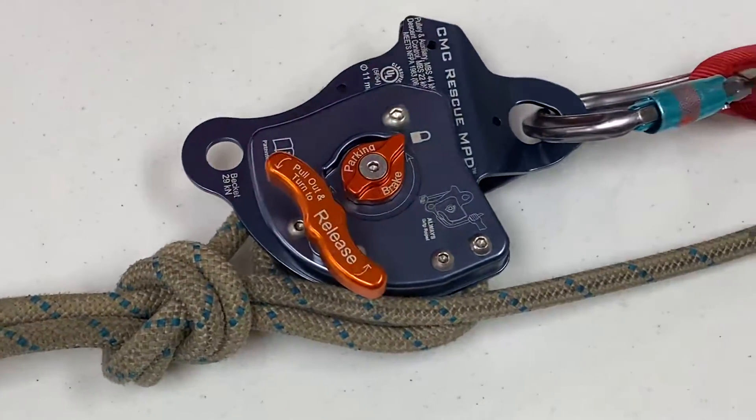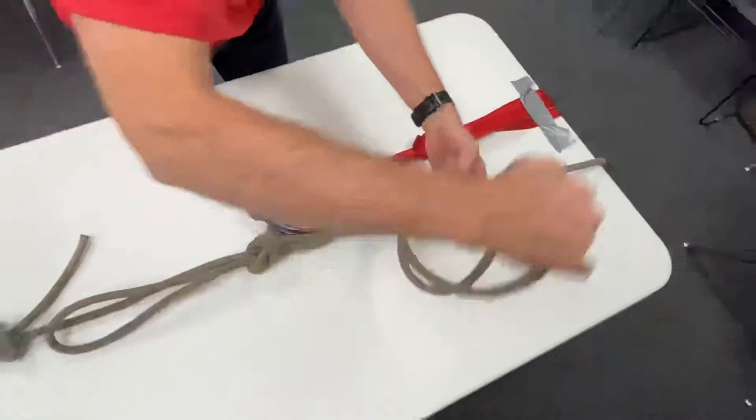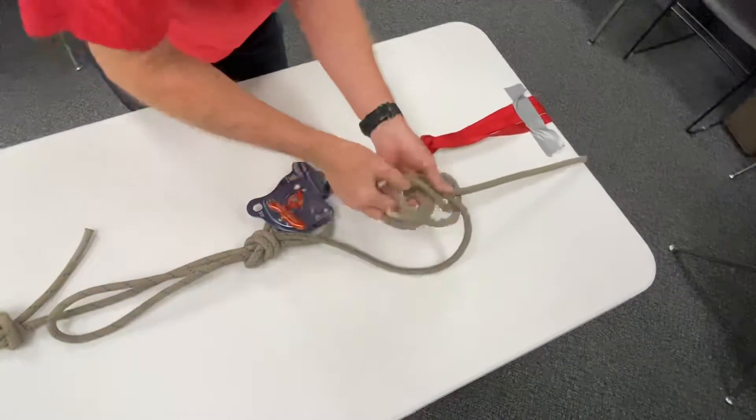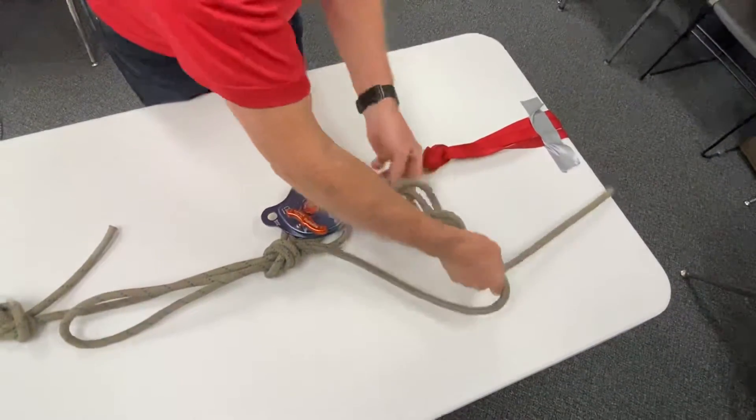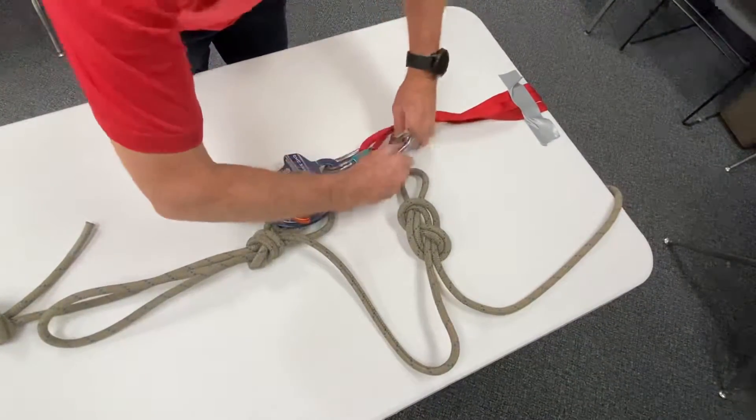And then if we'd like, I can put a catastrophe knot on here with an overhand figure eight and attach that to our anchor as well.